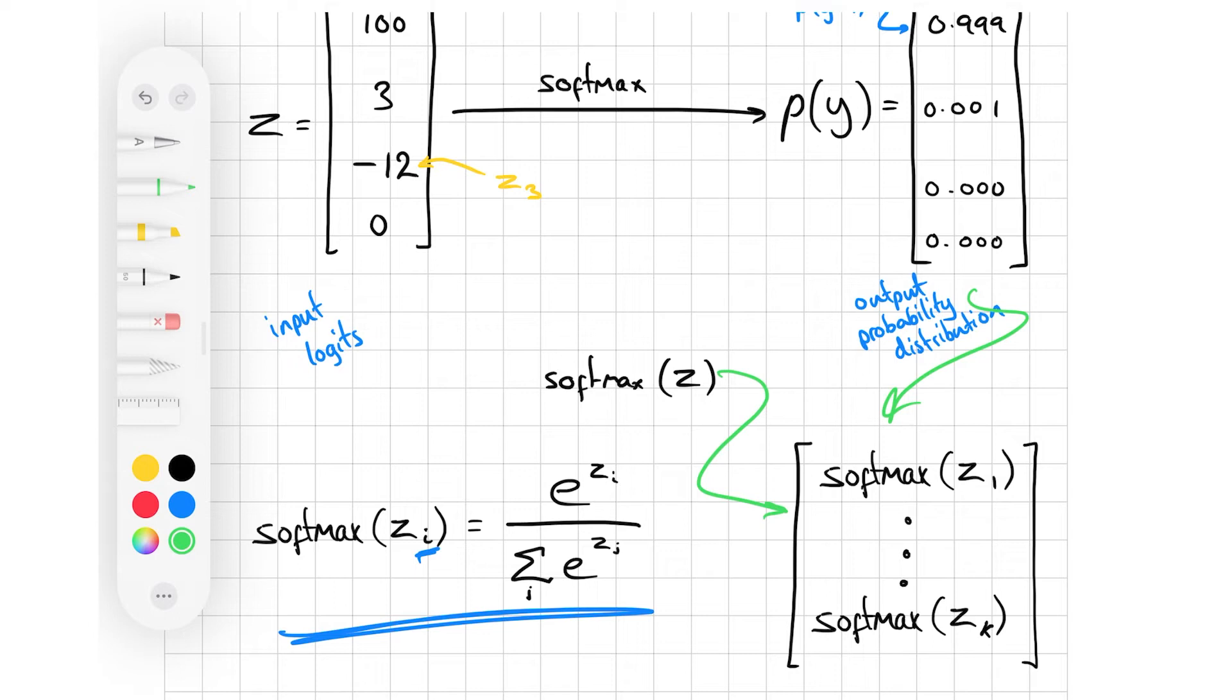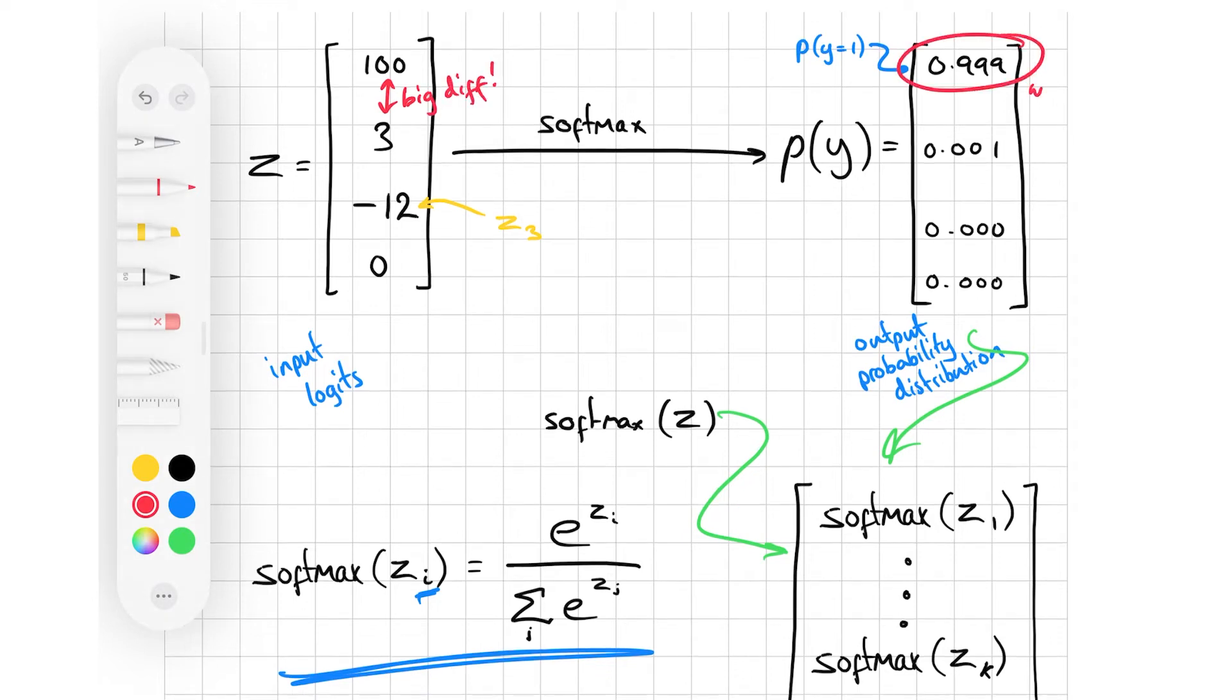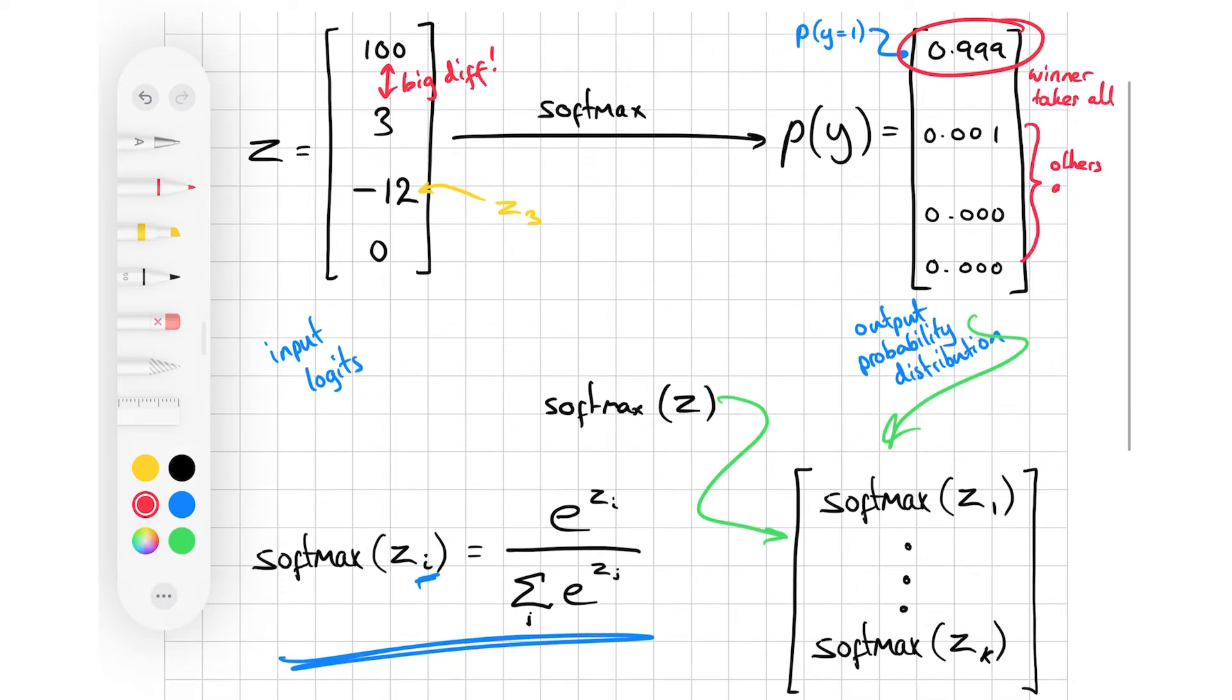Because of the fact that the output sums to 1, increasing one input element pushes down all the outputs of all the others. And when the difference between the largest input and the others is significant, the winner takes all. The largest element is pushed up to 1, while all the others are pushed to 0.